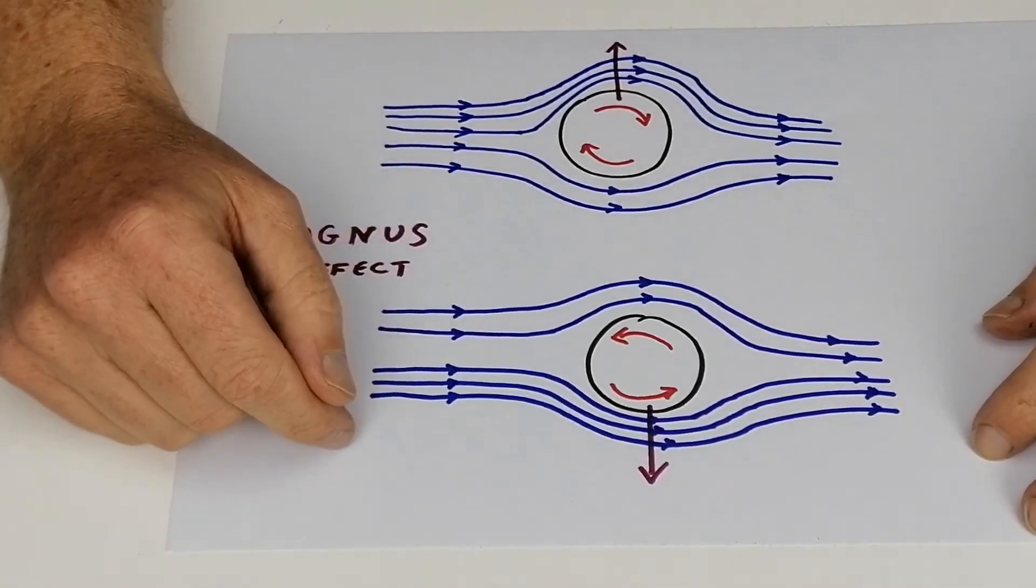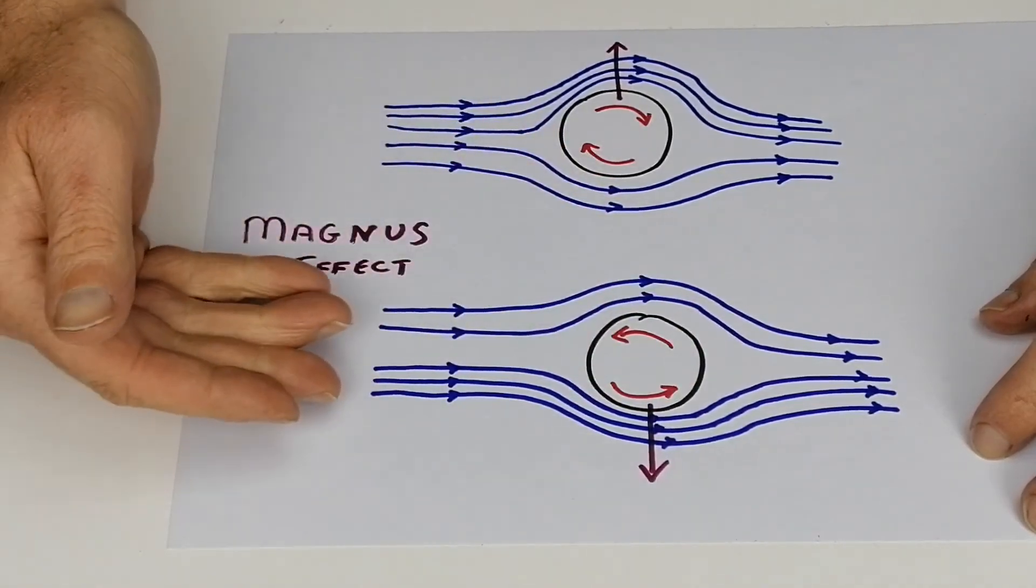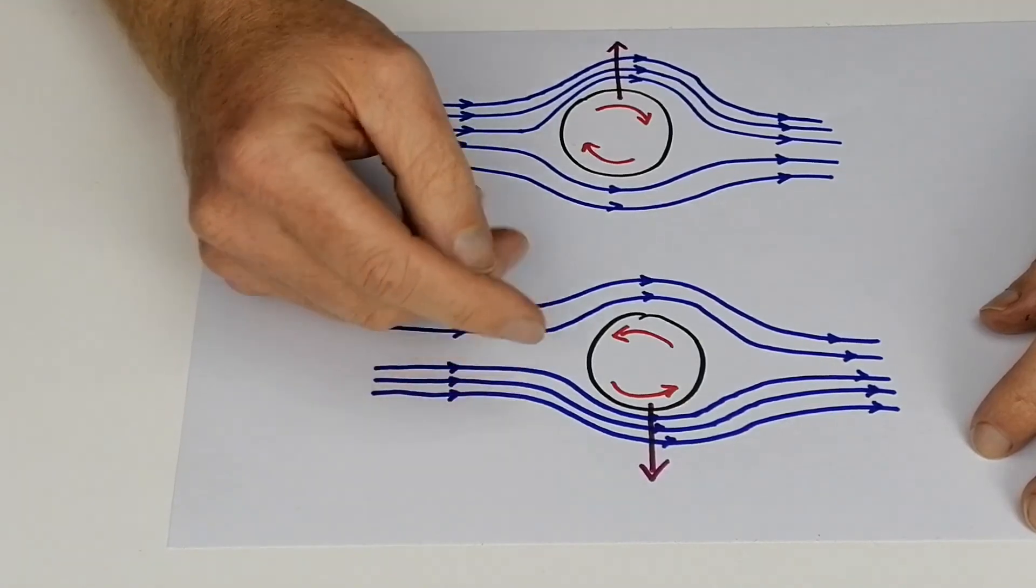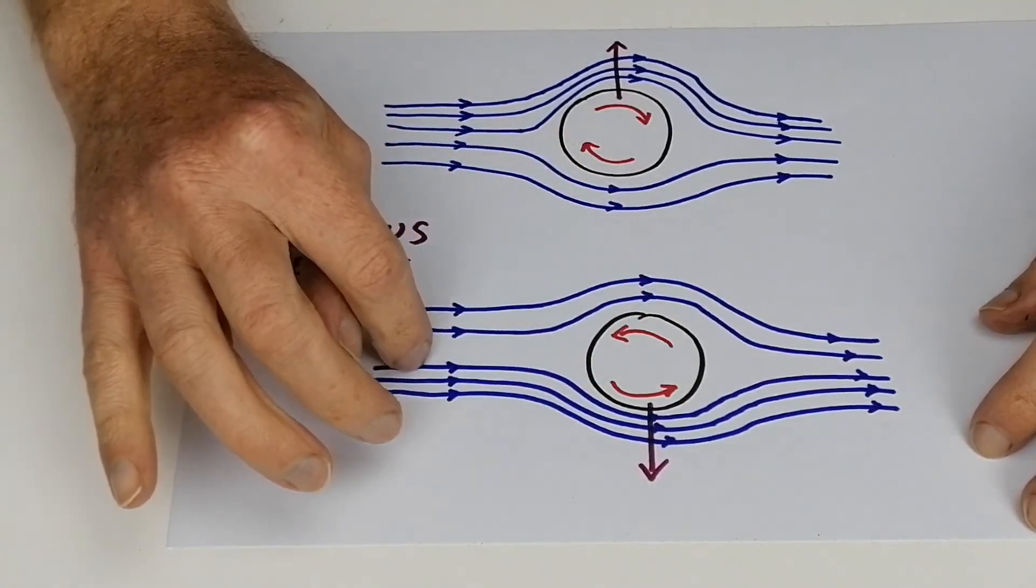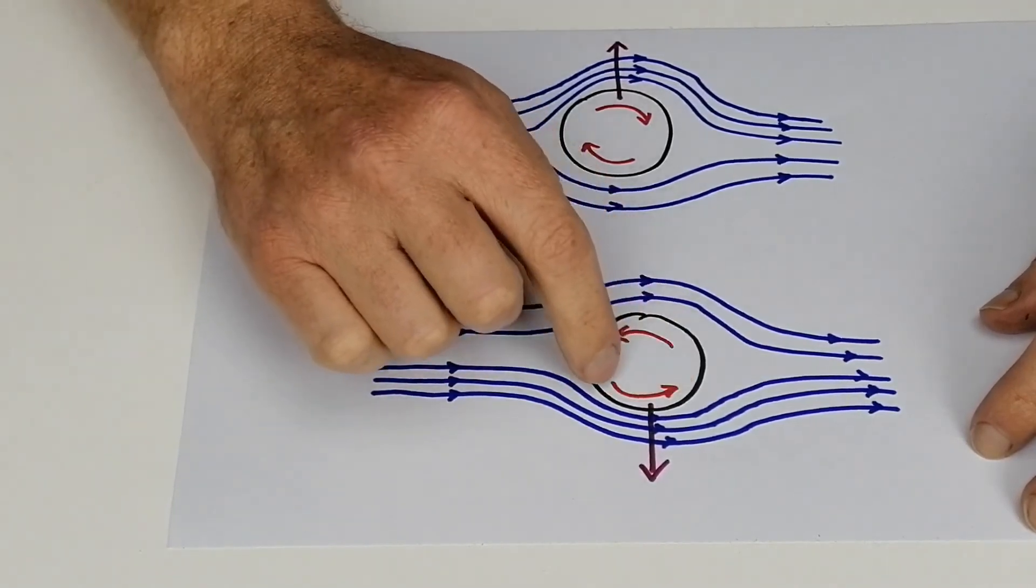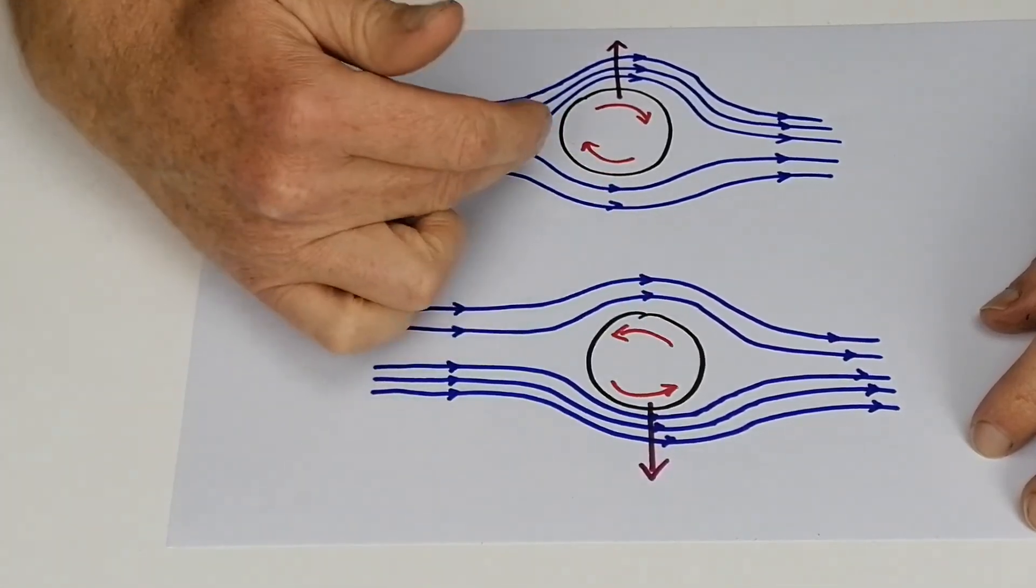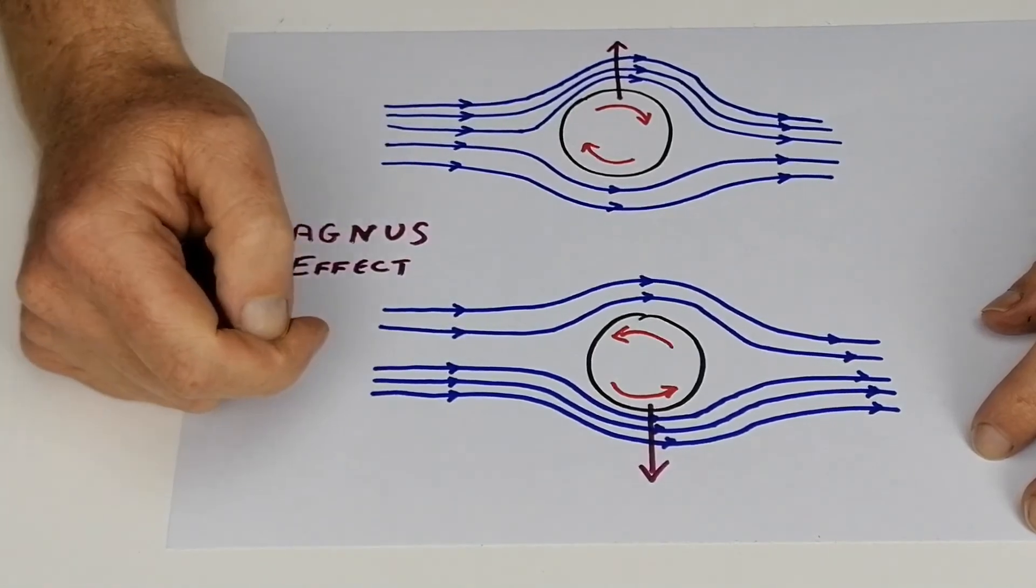When you make the coffee cup spin in the opposite direction, so the air is coming from this direction, and as the air comes from this direction you can see now the top of the cup is actually working against the way the air is coming, and the bottom of the cup is going in the direction of the air. Because of this, you get a force down. So that's why when you spin it one direction it goes up, and when you spin in the opposite direction it goes down.